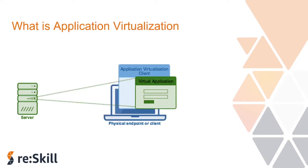Before we deep dive into AWS AppStream, let us discuss application virtualization. So what is application virtualization? In a traditional world, you install software in your laptop or desktop and you access it. But let us assume that you need your software to be securely accessed in a data center, or accessed only when you are in a corporate network, or you are running sensitive software which should prevent copying data from your application to your endpoint. That's where application virtualization comes into picture.